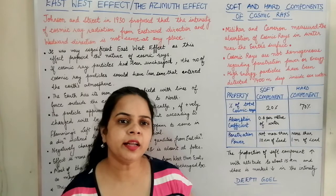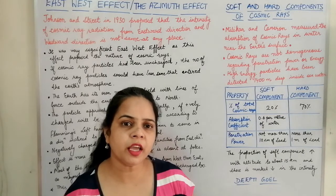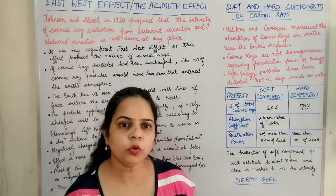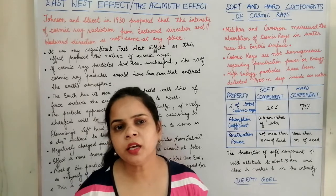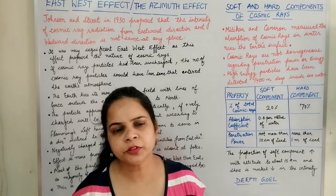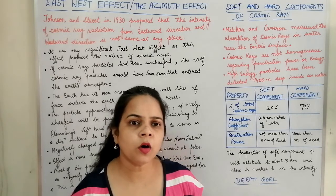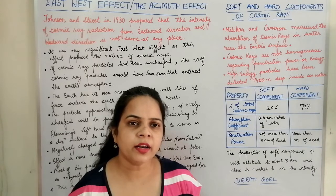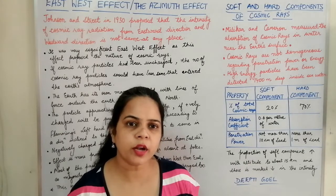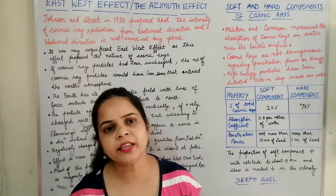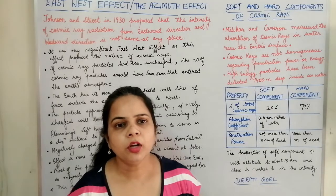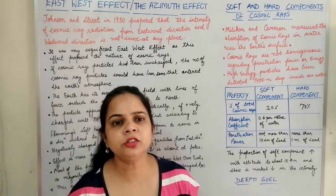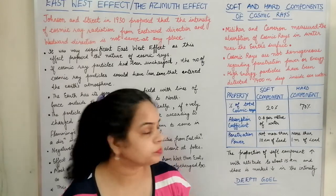It was sometimes thought that the sun was the major source of cosmic ray emission, which would mean the intensity should be more during the day and less during the night. However, experiments found that the intensity does not depend on day or night — it is the same whether calculated at daytime or nighttime. So the assumption that the sun is the source of cosmic rays was overruled.